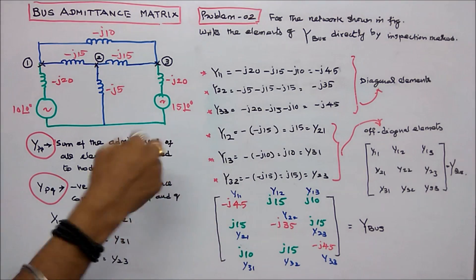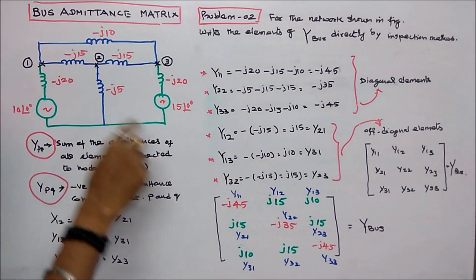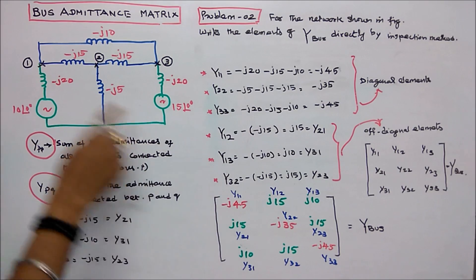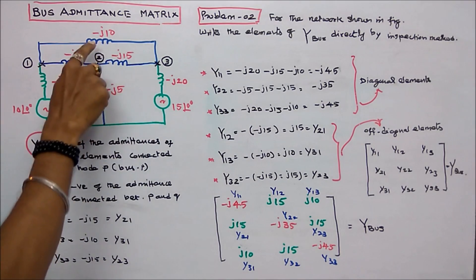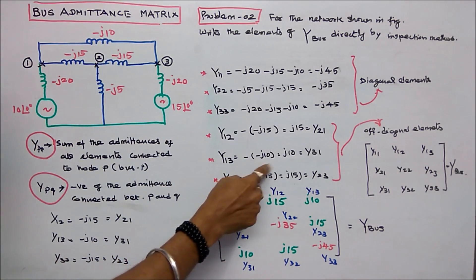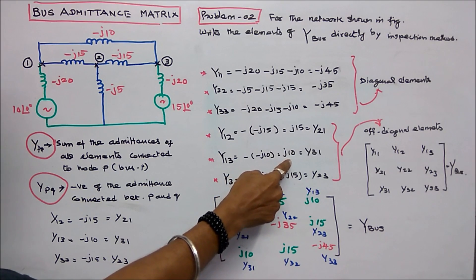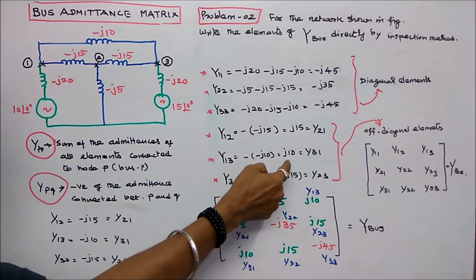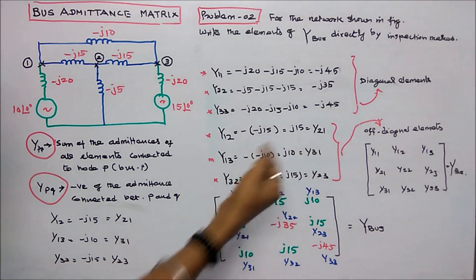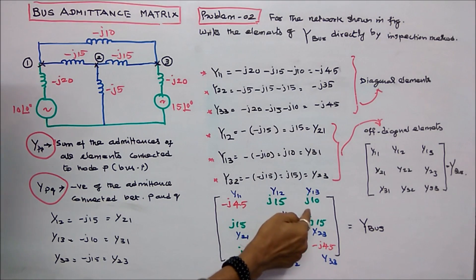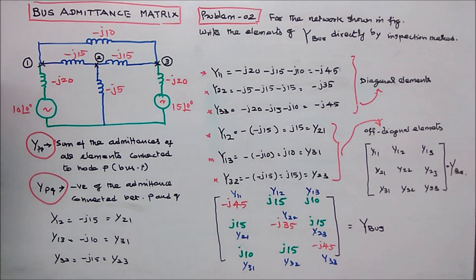Y13 equals negative of minus J10, which equals J10. So Y13 equals J10 and Y31 equals J10.